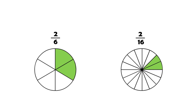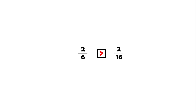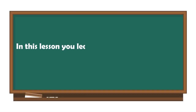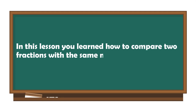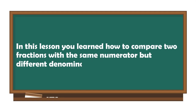Therefore, the fraction two-sixths is greater than two-sixteenths. In general, if the numerators of two fractions are the same, the fraction with the smaller denominator is the greater fraction. In this lesson, you learned how to compare two fractions with the same numerator, but different denominators.